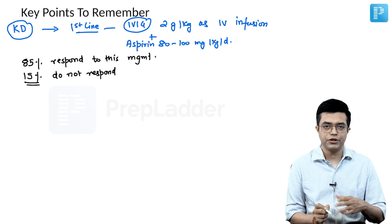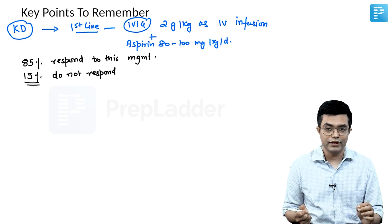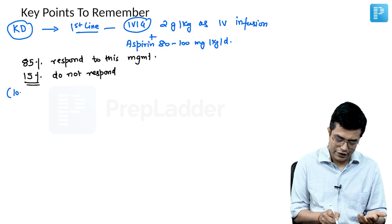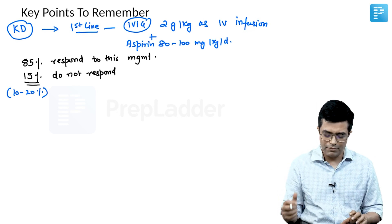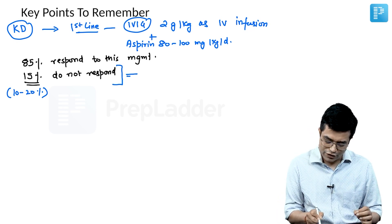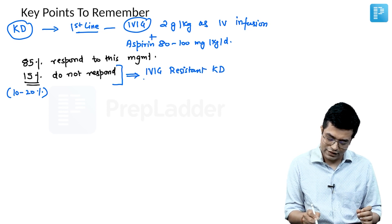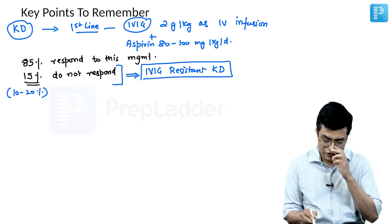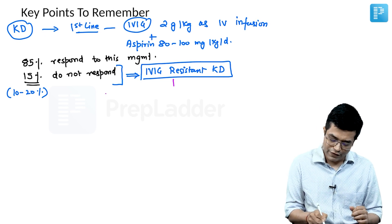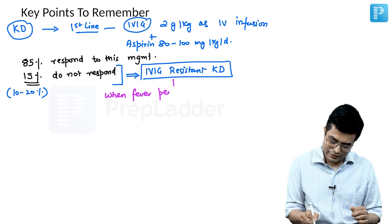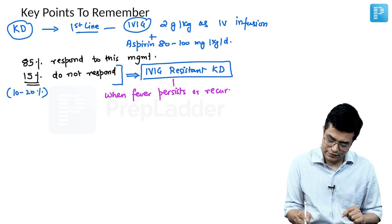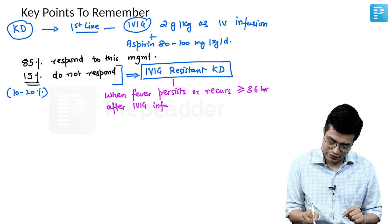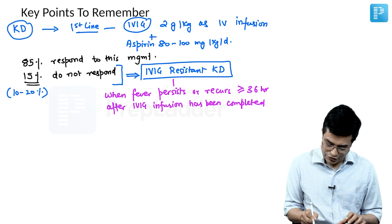According to western textbooks like Nelson, 15 percent do not respond to this therapy. The IAP — Indian Academy of Pediatrics Consensus Statement on Management of Kawasaki Disease — gives a value of 10 to 20 percent not responding, which has the same middle value of 15 percent. These patients who are not responding are labeled as IVIG-resistant Kawasaki disease. IVIG-resistant KD is defined as fever that persists or recurs at least 36 hours after IVIG infusion in appropriate dose has been completed.